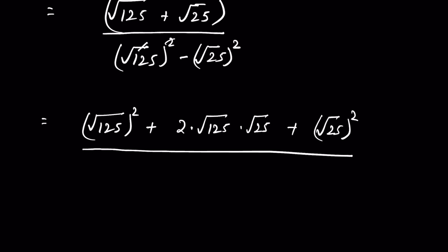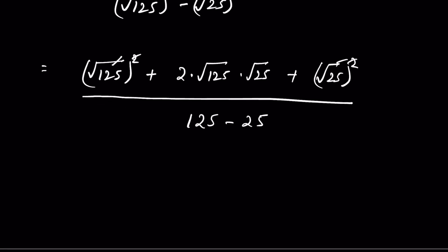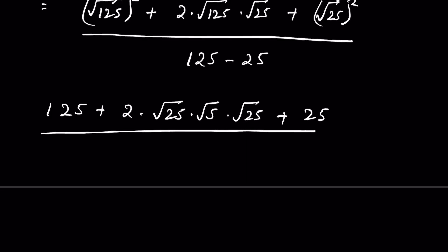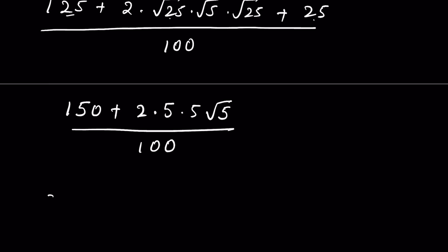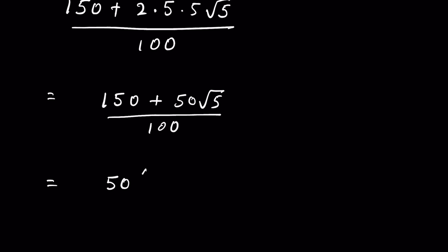The denominator uses difference of squares: square root of 125 squared minus square root of 25 squared, which is 125 minus 25 equals 100. In the numerator, square root of 125 squared is 125 and square root of 25 squared is 25, giving 125 plus 25 equals 150. For the middle term, 2 times square root of 125 times square root of 25: square root of 125 equals square root of 25 times square root of 5, so the middle term is 2 times 5 times square root of 5 equals 10 root 5. So the numerator is 150 plus 10 root 5 upon 100. Taking 50 common gives 50 times (3 plus square root of 5) upon 100, which simplifies to 3 plus square root of 5 upon 2.